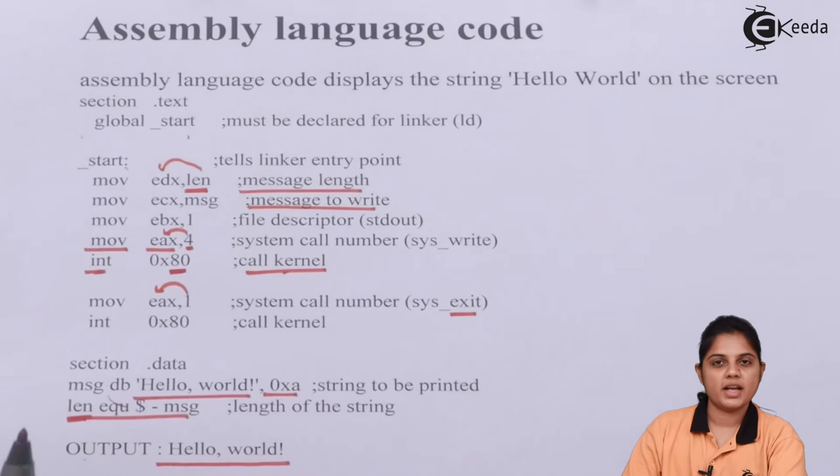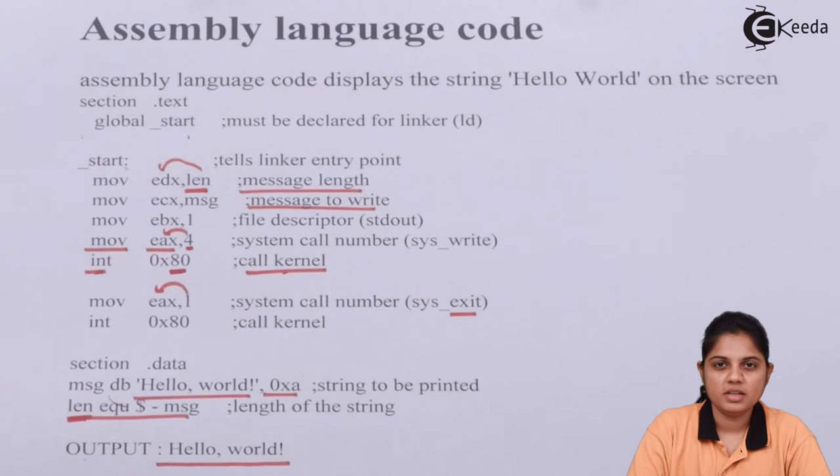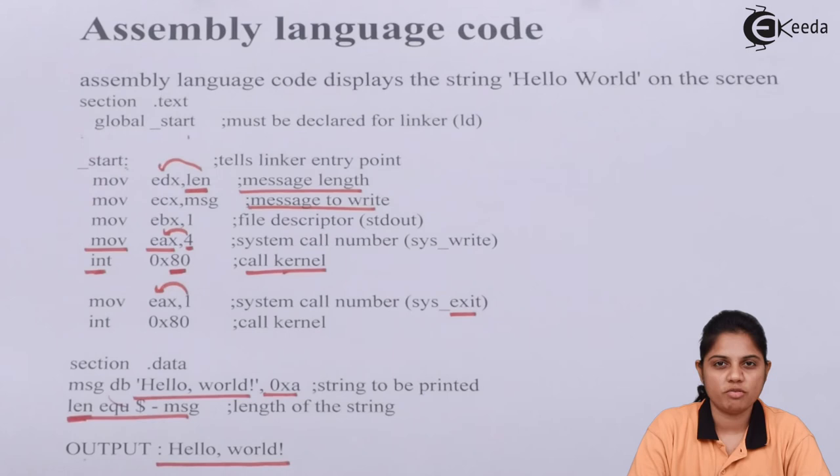I hope you have understood what is assembly language programming. There are many more instructions other than what we have discussed here. Those can be used to write a program which can be understood by the processor. Along with assembly language, C programming can also be used. In the next upcoming video we will see what C programming is and how a program can be written using C programming.